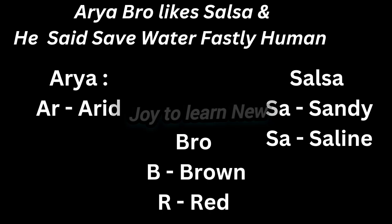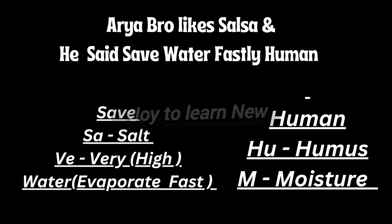Next, take the word 'salsa': the first SA stands for sandy, and the last SA stands for saline. Arid soil is sandy in texture and saline in nature. So to summarize: arid soil ranges from brown to red in color, and they are generally sandy in texture and saline in nature.